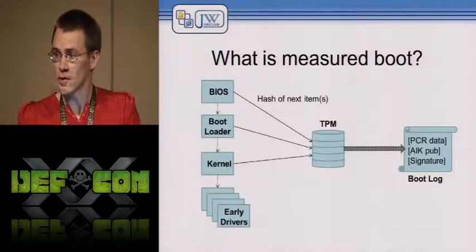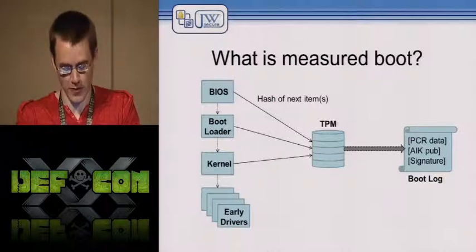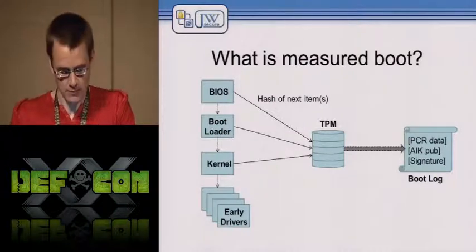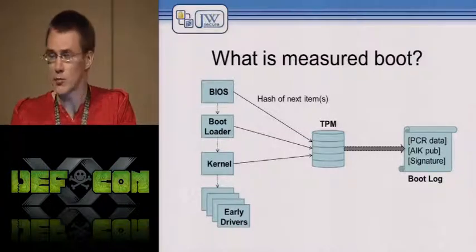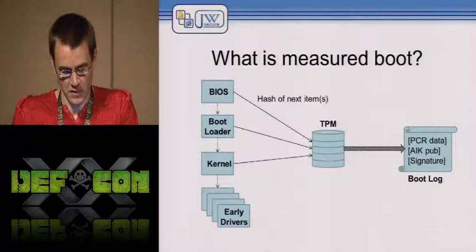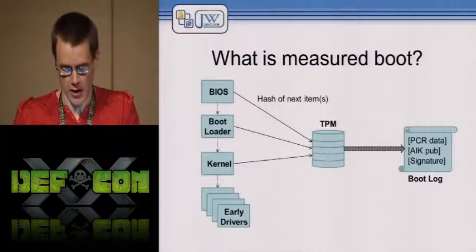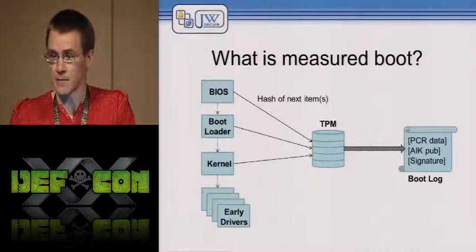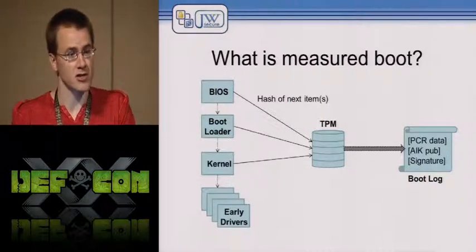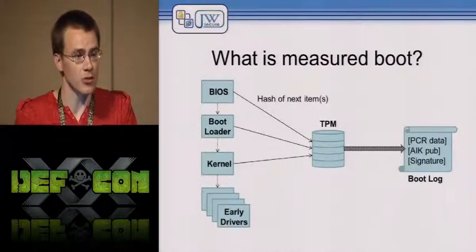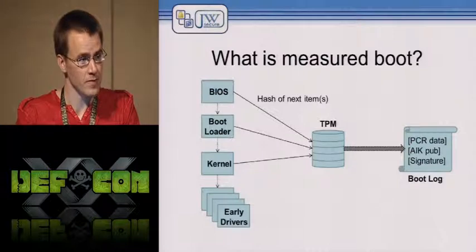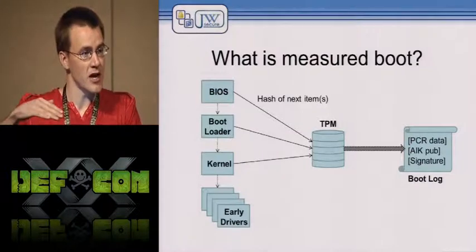Data is stored in the TPM in platform configuration registers, or PCRs. Starting with the BIOS, it takes a hash of the bootloader — which in Windows 8 is boot manager.exe — and stores that hash in the TPM, then hands off control to boot manager.exe. Boot manager.exe launches either winload if it's a clean boot, or winresume if you're coming out of hibernate, and then those launch the kernel. Each one along the chain stores the hash of the next.